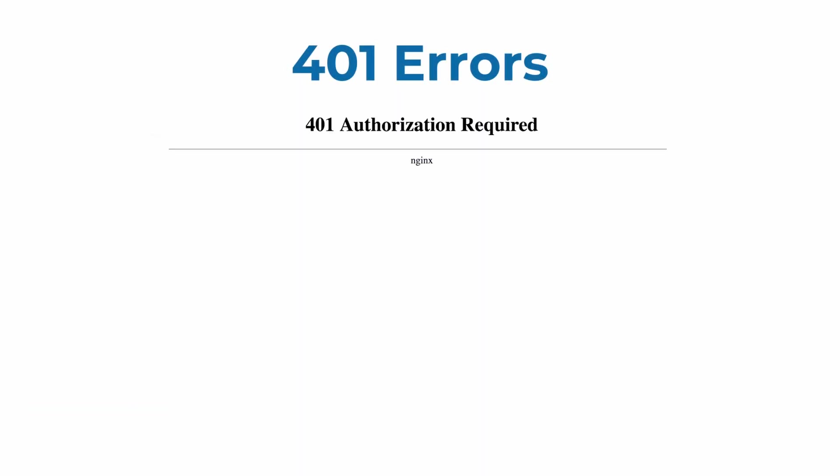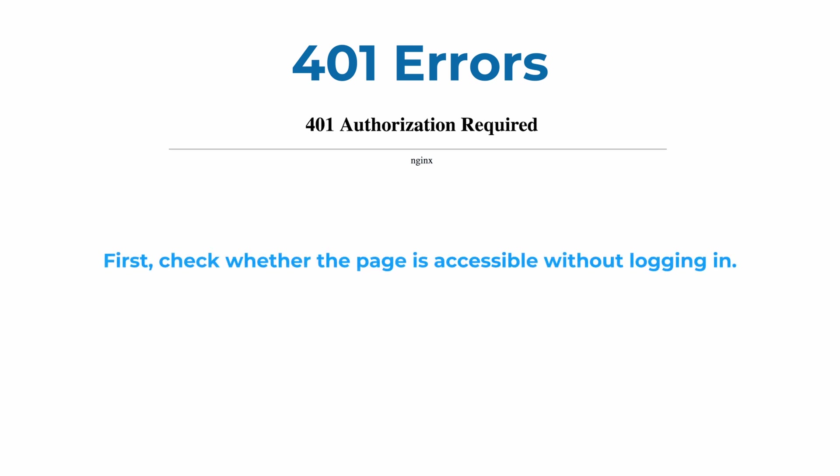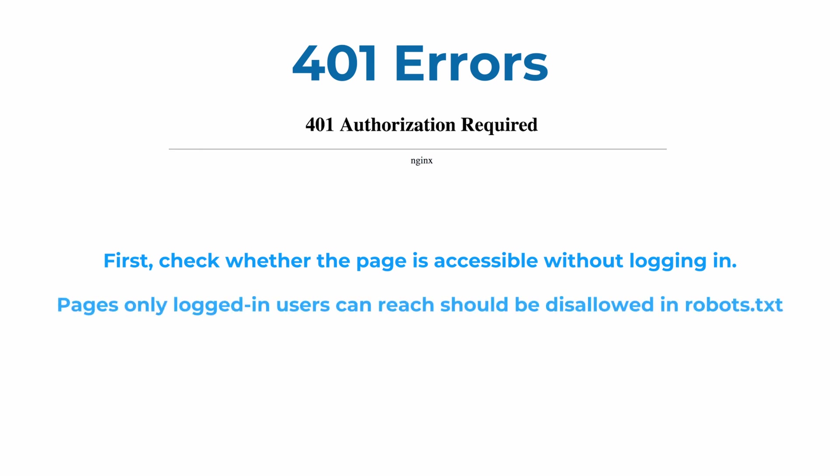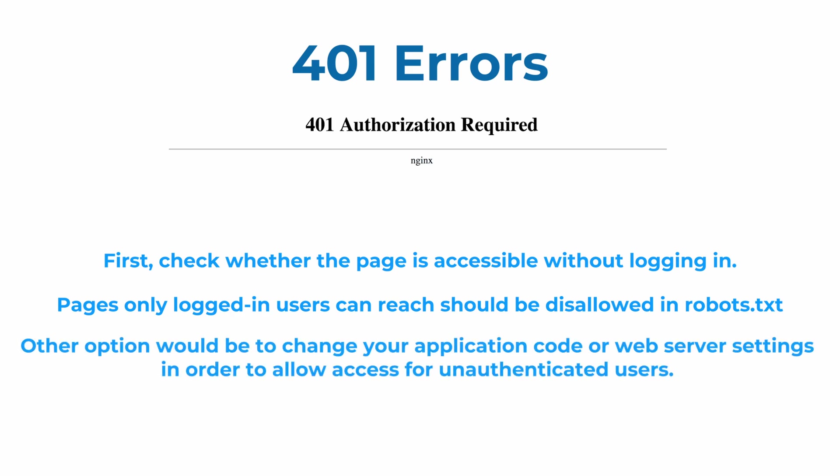And the last on the list is 401 pages. First, check whether the page is accessible without logging in. If it is, change your application code or web server settings in order to allow access for unauthenticated users. Conversely, if the page should only be accessible to logged-in users, think about excluding it with the help of a robots.txt file.